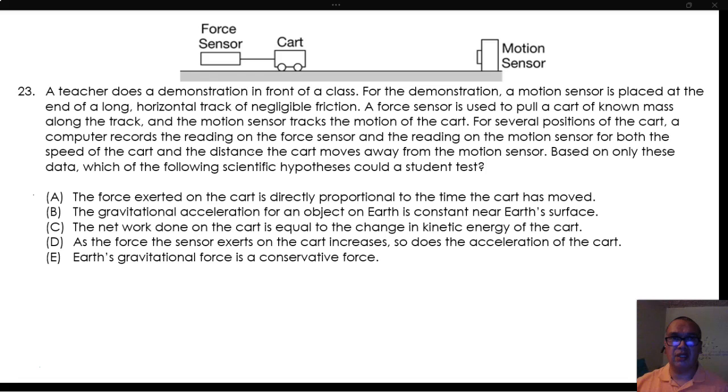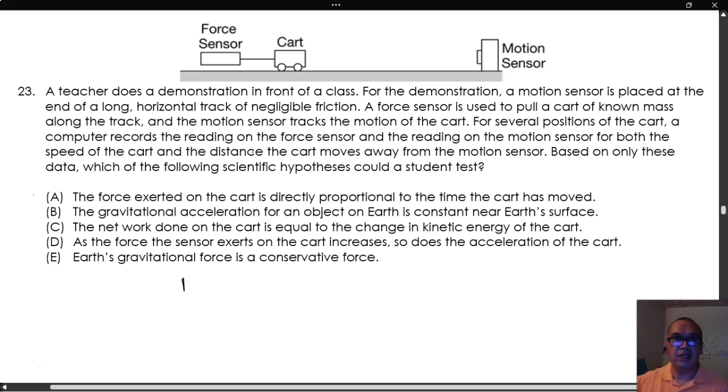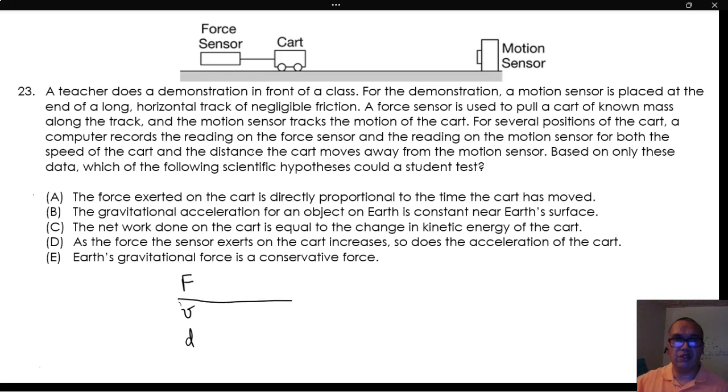A force sensor is used to pull a cart of known mass along the track, and the motion sensor tracks the motion of the cart. For several positions of the cart, a computer records the reading on the force sensor and the reading on the motion sensor for both the speed of the cart and the distance the cart moves away from the motion sensor.